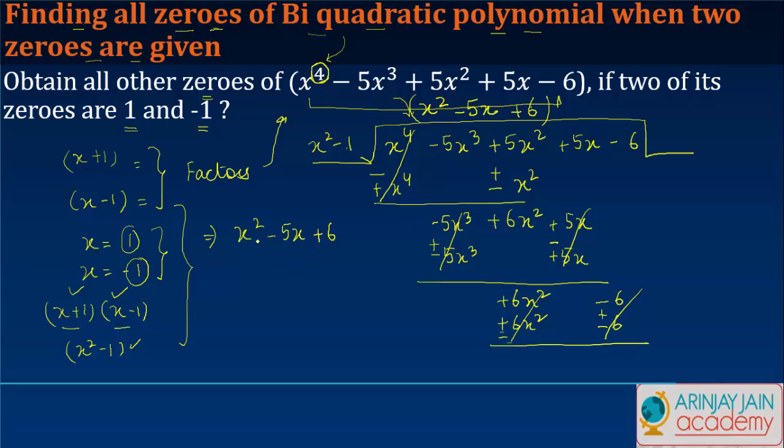So this is the number if I just equate this with 0. Why 0? Because we are told that this remaining polynomial is supposed to be a factor of the original polynomial. And I solve this. What do I get?